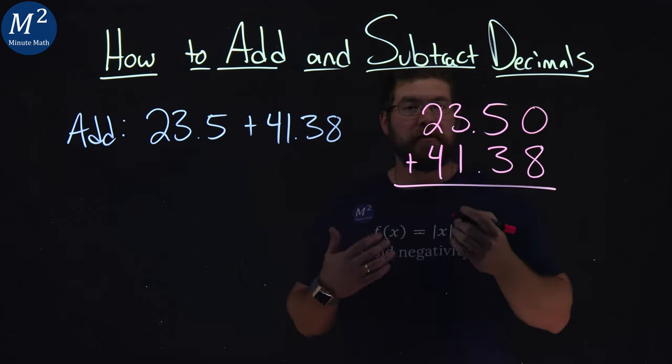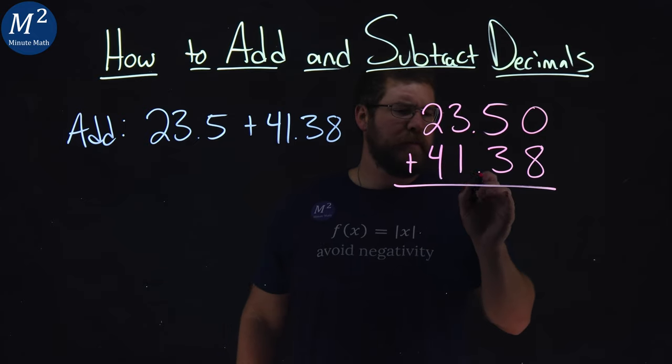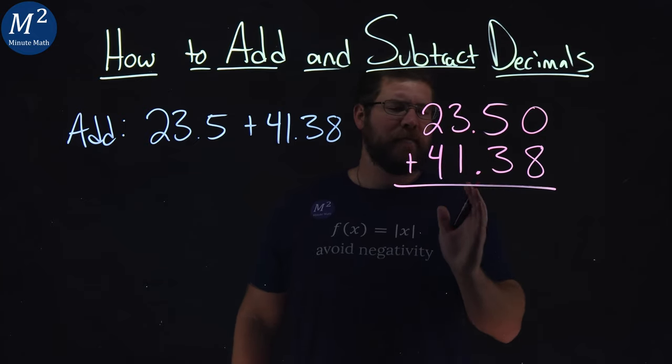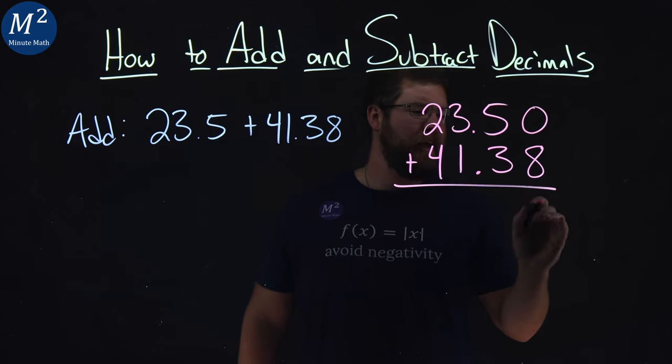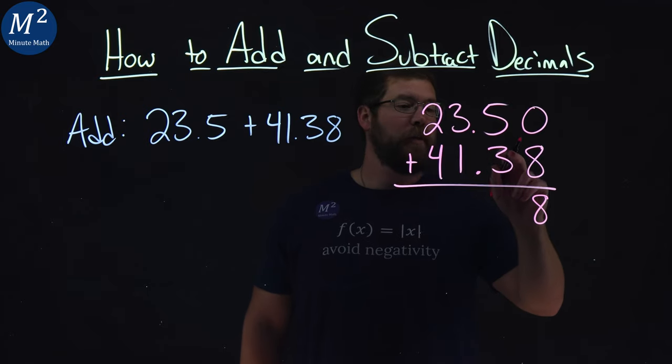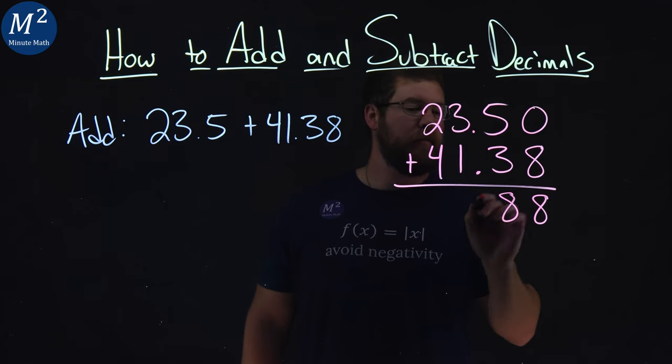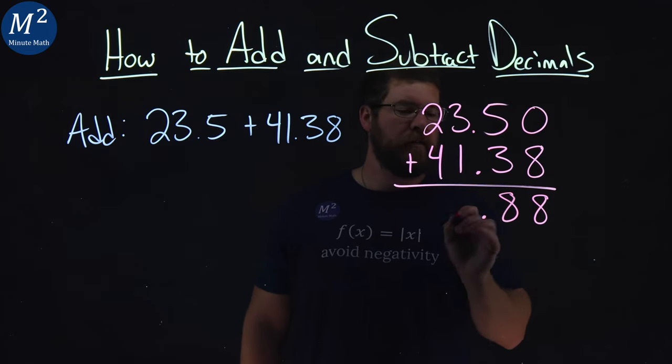From here, we add just like any other number, but we make sure the decimal places line up. Now we add down here. 0 plus 8 is just an 8. Pretty easy. 5 plus 3 is also an 8. Got it? Decimal place goes right here.